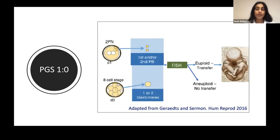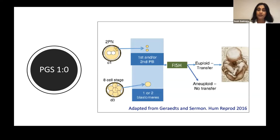First generation PGS involves either a blastomere biopsy or polar body biopsy, and then analysis of a fixed number of chromosomes — not all chromosomes — using FISH. Whatever is determined as euploid by this FISH analysis, that embryo is transferred; the aneuploid embryo is not transferred.